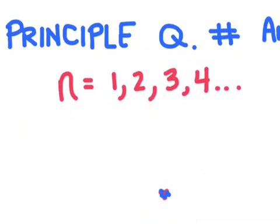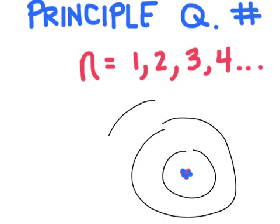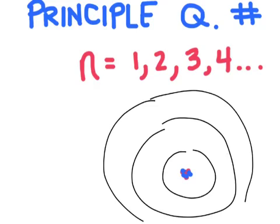The principal quantum number is going to have integer values that are whole numbers starting with one and going all the way up basically to infinity. Now these describe the energy level of an electron. And so if we remember Bohr's diagram, it's going to kind of be like the rings of Bohr's diagram. Each ring is going to be adding another energy level. And so the first ring would be quantum number of one, two, three, and so on. The bigger the number, the larger the energy.